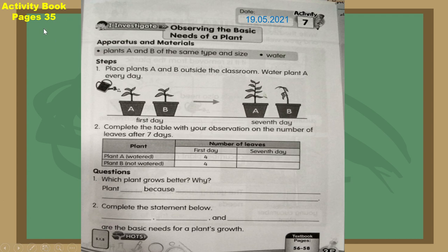Activity book page 35. Now class, we are going to observe the basic needs of a plant. Here we have Plant A and Plant B — same type. Step one: place Plant A and B outside the classroom. Water Plant A every day. Both plants are outside the classroom. The first picture is the first day, and after that is seven days.